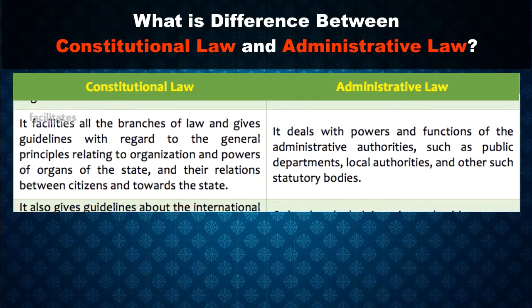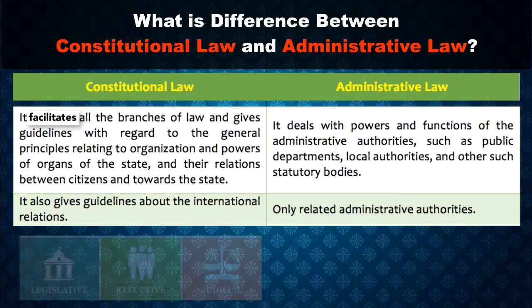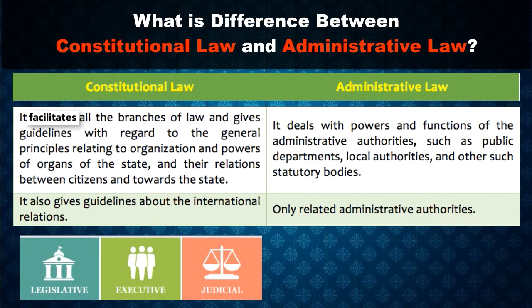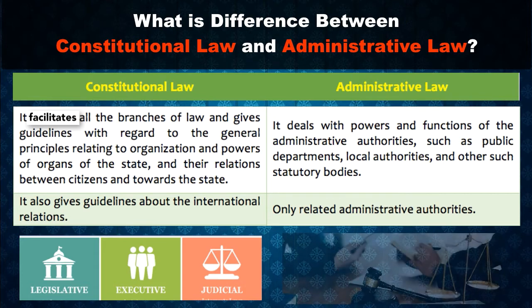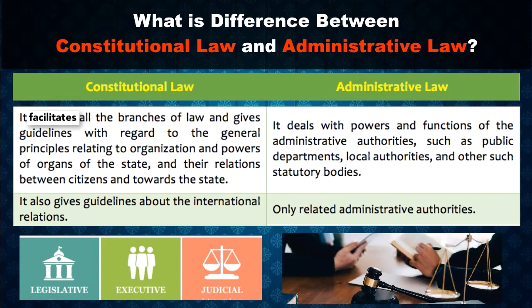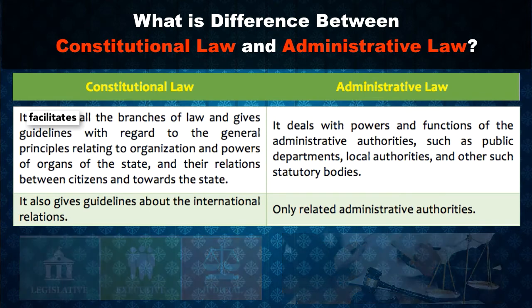Fourthly, constitutional law includes all the branches of law and gives guidelines with regard to the general principles relating to the organization and powers of organs of the state and their relations between citizens and towards the state, whereas administrative law deals with the powers and functions of administrative authorities, such as public departments, local authorities, and other statutory bodies.